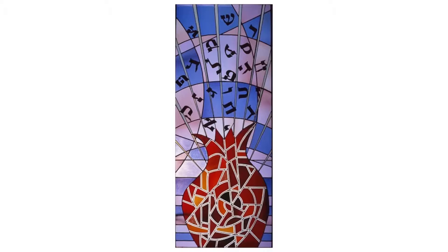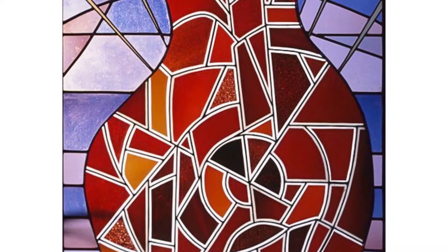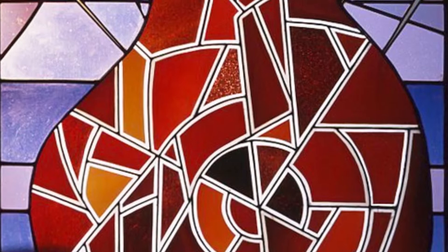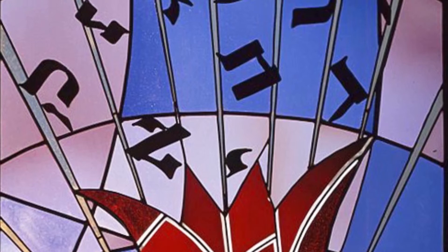Starting with the window on the far right, which represents the first day of creation: what you see is a pomegranate — but a fractured pomegranate. It's all fractured and broken up because it's the broken vessel that was shattered at the beginning of creation and whose parts are in all of us. Flowing out of this vessel is the Tohu B'vohu, the raw material of creation — the letters that will make up the words that will write the Torah.